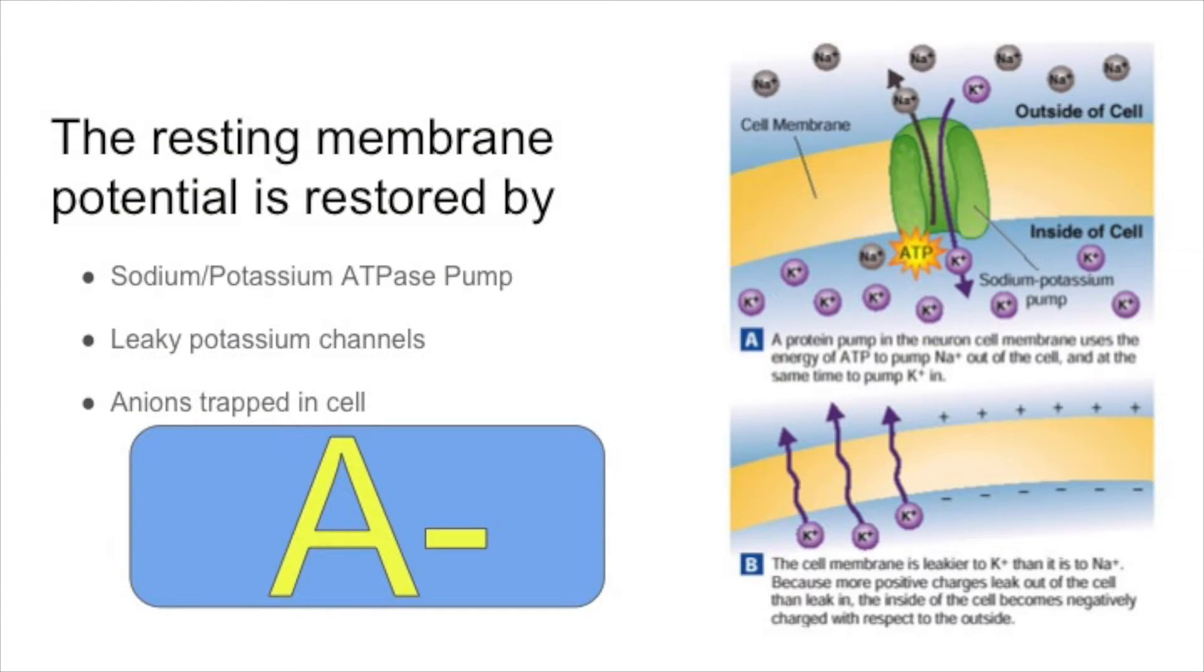The potential gradient is determined by the sodium-potassium ATPase pump, leaky channels, and a concentration of anions trapped in the cell. Sulfate, phosphate, and negatively charged proteins do not leave the cell because they are too large to exit through the cell membrane without active transport.